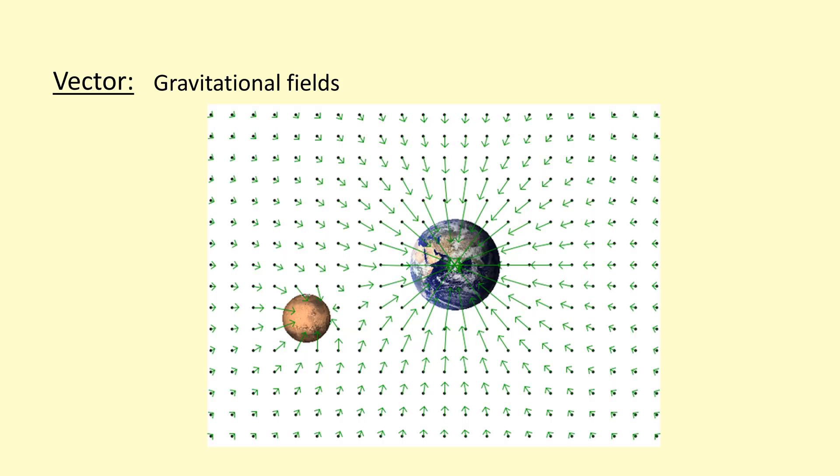Another example of a vector is gravitational field and as you can see here the length of the arrow indicates the strength of the magnitude of the field and then the direction obviously is clearly pointing in a certain direction as well at each point.